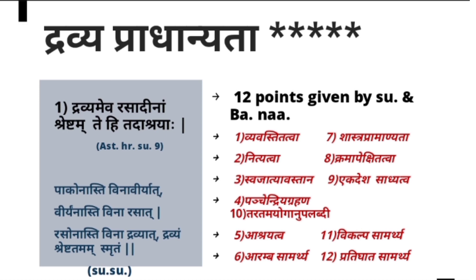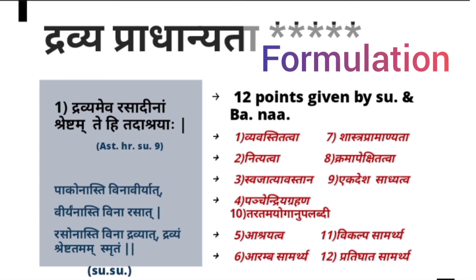There is Taratama (superiority/inferiority) in Gunas, but when it comes to Dravya itself, there is no such superiority or inferiority. If two sugar crystals are placed together, we cannot say one is sweeter than the other — both are equally sugar. So there is no superiority or inferiority for Dravya; Dravya is Pradhana. The eleventh point is Vikalpa Samarthya — we cannot form different Kalpanas (Swarasa, Kalka, Kvata, etc.) using Rasa, Guna, Virya, or Vipaka.